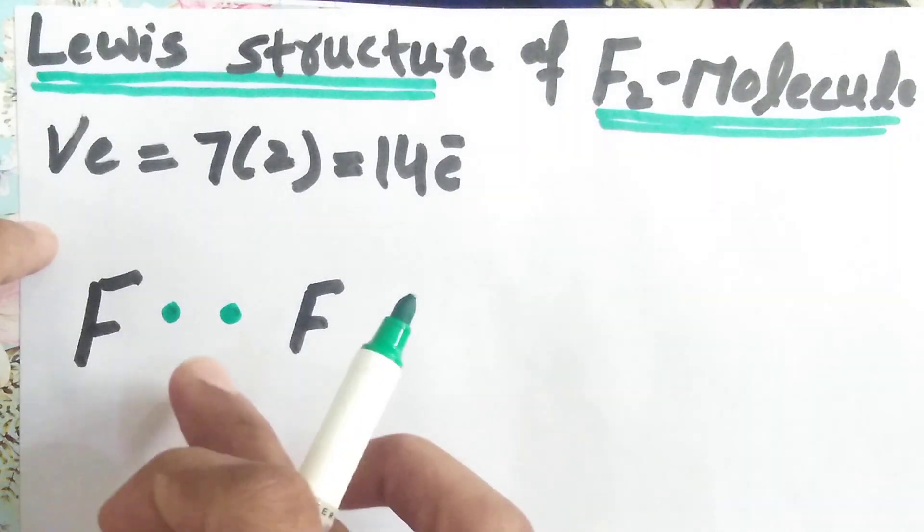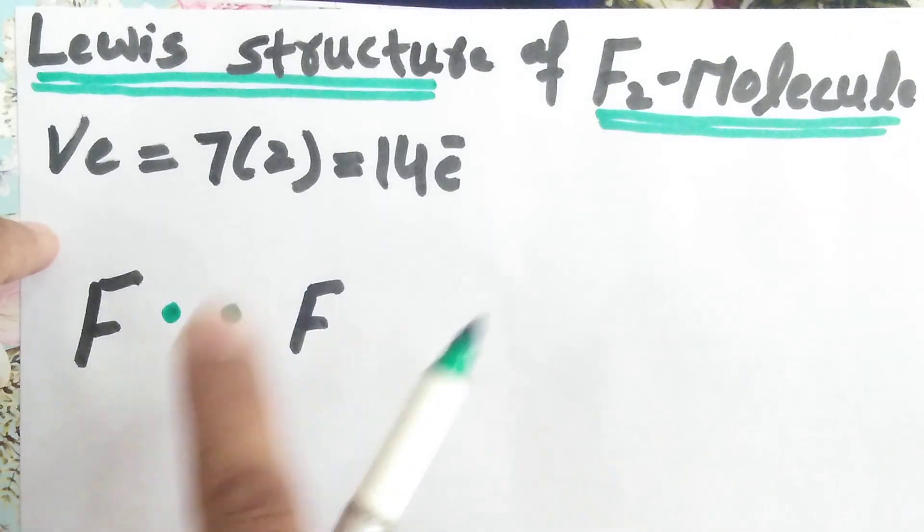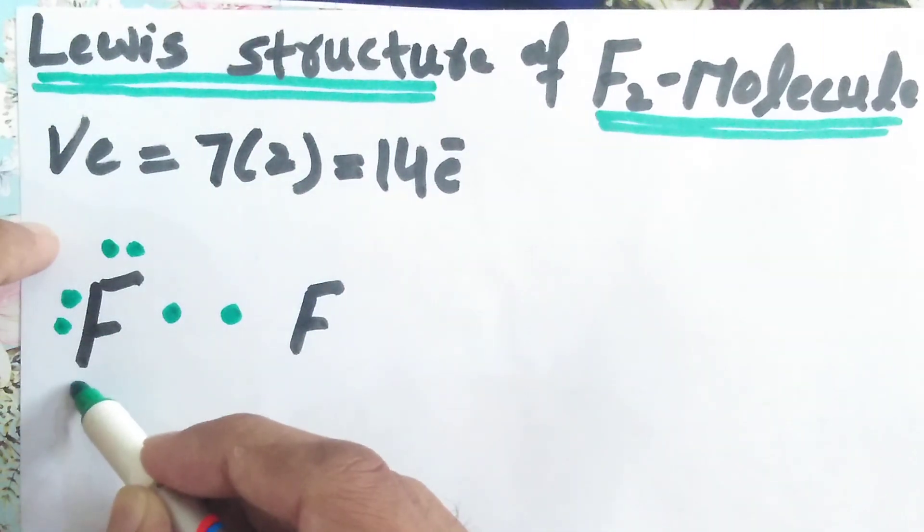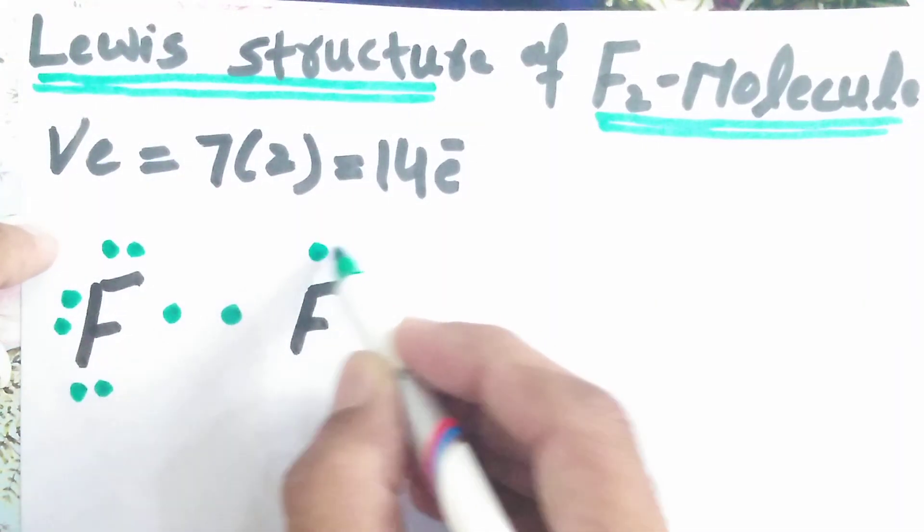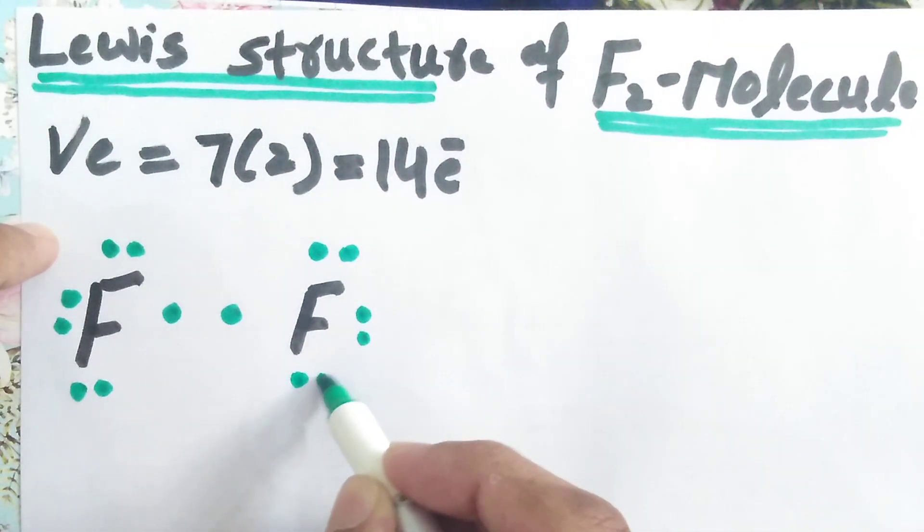So we put two dots in between the two fluorine atoms: 2, 4, 6, 8, 10, 12, 14.